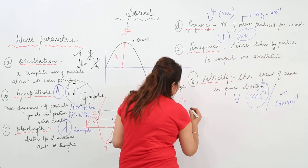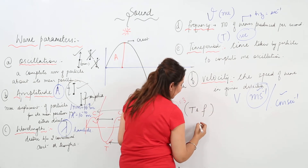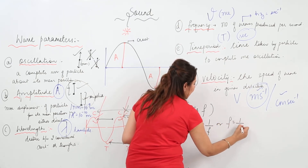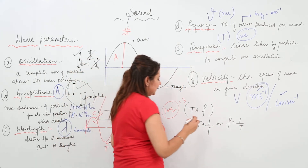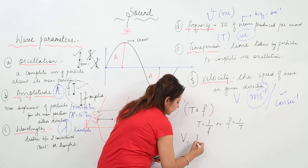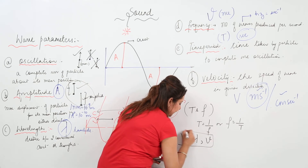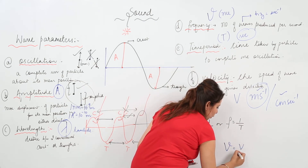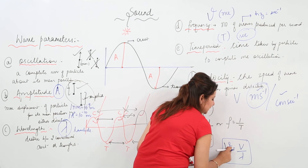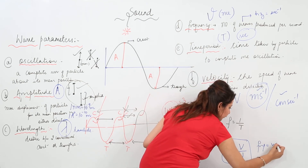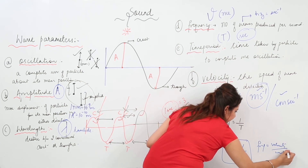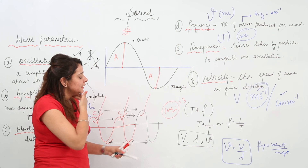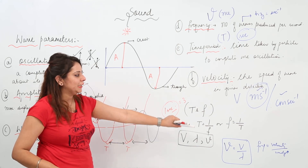There is a relation between time period and frequency: time period T = 1/frequency, or frequency = 1/T. There is also a relation between velocity, wavelength, and frequency: frequency (ν) = velocity (V) divided by wavelength (λ). So ν = V/λ. This is how we relate these wave parameters.